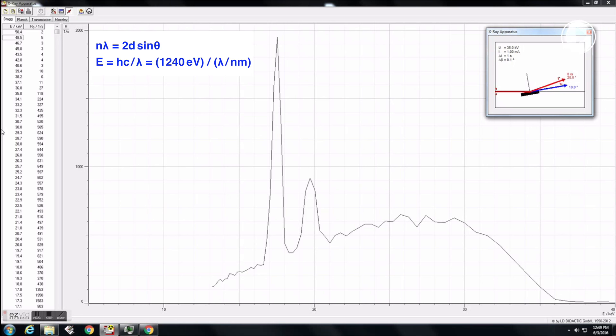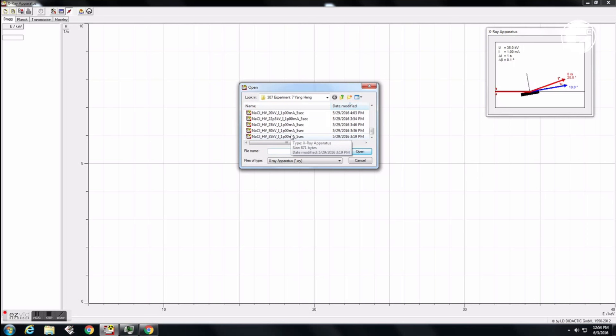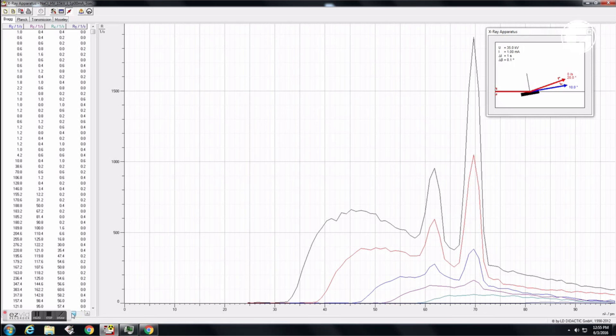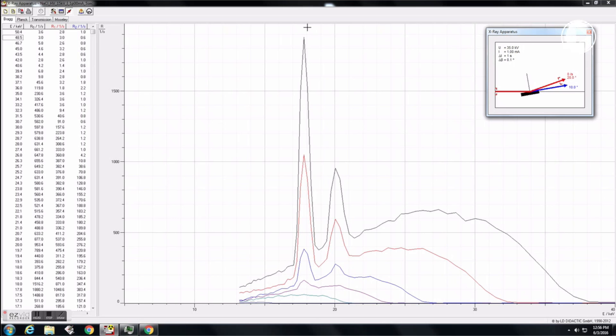And don't forget to save your data at the end. Now increase the acquisition time per data point to 5 seconds, and take data for tube voltages of 35, 30, 25, 22.5, 20, and 15 kV. Remember to save data to a file for each setup. The graph here shows the overlay of spectra for all 6 voltage setups.